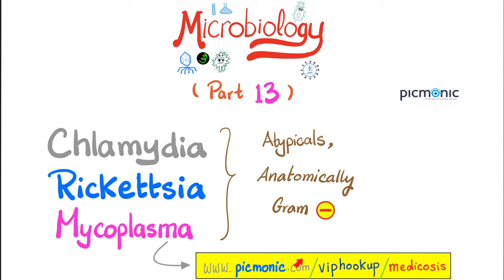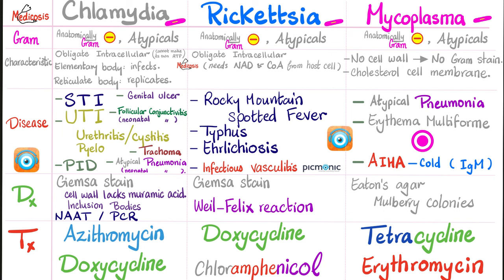As we always do towards the end of each microbiology video, we summarize everything in one slide. Here is chlamydia, rickettsia, and mycoplasma — all atypical bacteria, all anatomically gram-negative or similar to gram-negatives, but in reality they do not stain well with gram stain. One reason is that mycoplasma doesn't even have a cell wall, making gram stain impossible. Mycoplasma has a cell membrane but no cell wall.